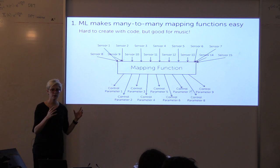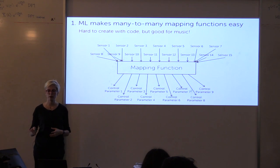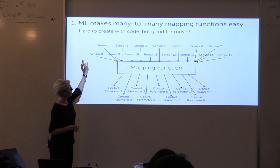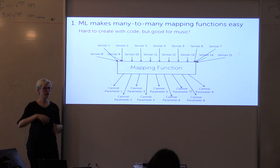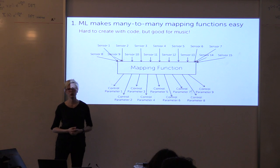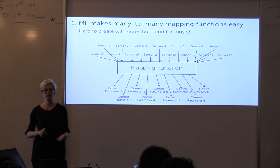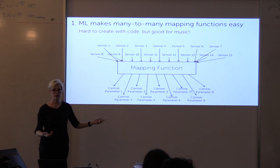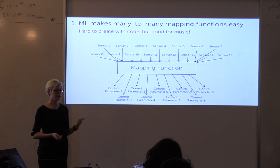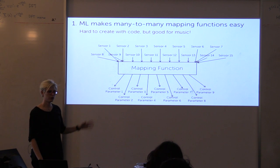In music in particular, one really practical benefit is that using supervised learning the way I showed in the demo makes it really easy to make many-to-many mappings. Marcella Wanderly and Andy Hunt's seminal work in the NIME space showed that many-to-many mappings — in which you have lots of sensors controlling lots of things that are all interconnected — can be easier to learn, can feel more musically expressive, and have commonalities with acoustic instruments. These types of functions, if you're writing them in code, are hard to write — and even worse when you write it and it works but doesn't do what you want. Machine learning makes that pretty easy.